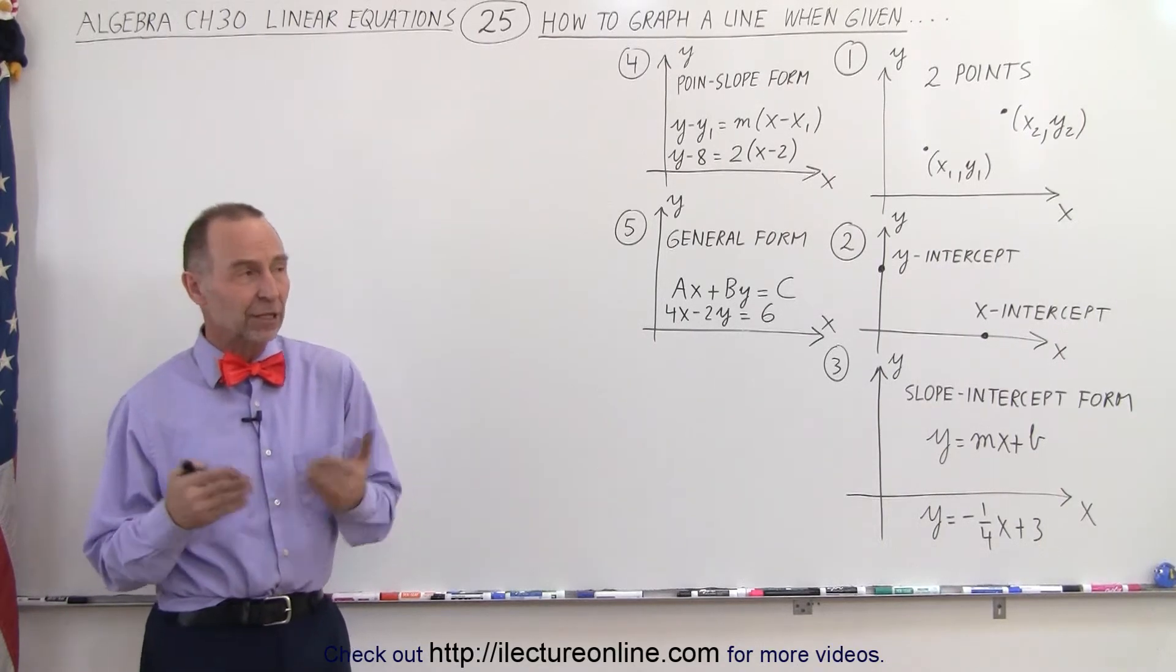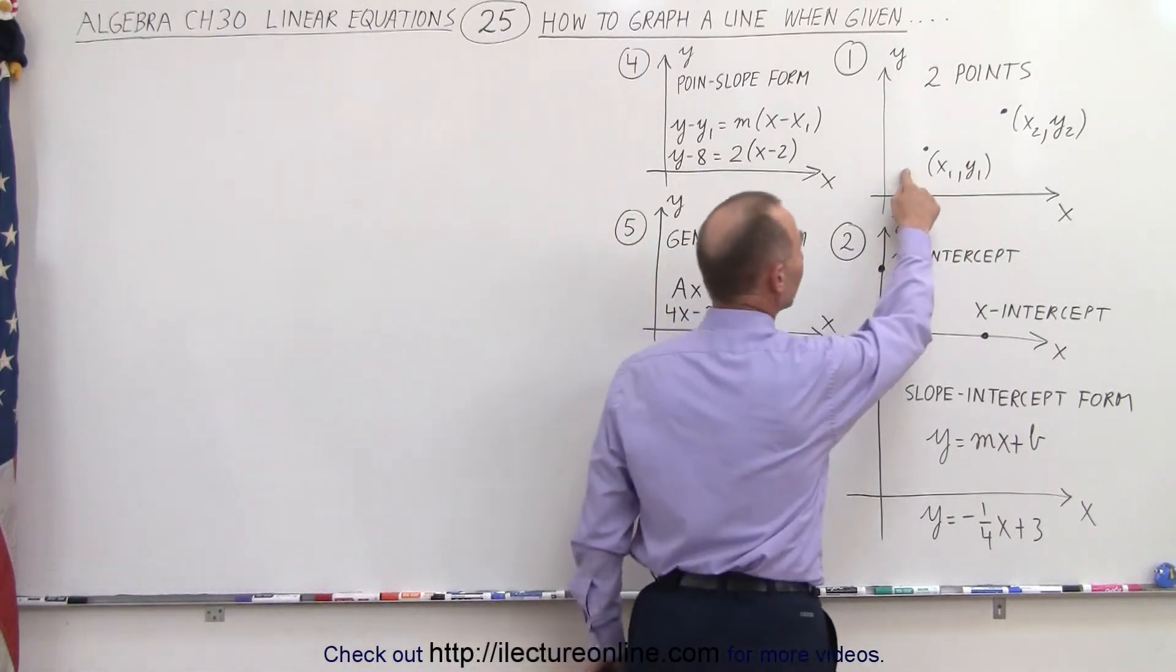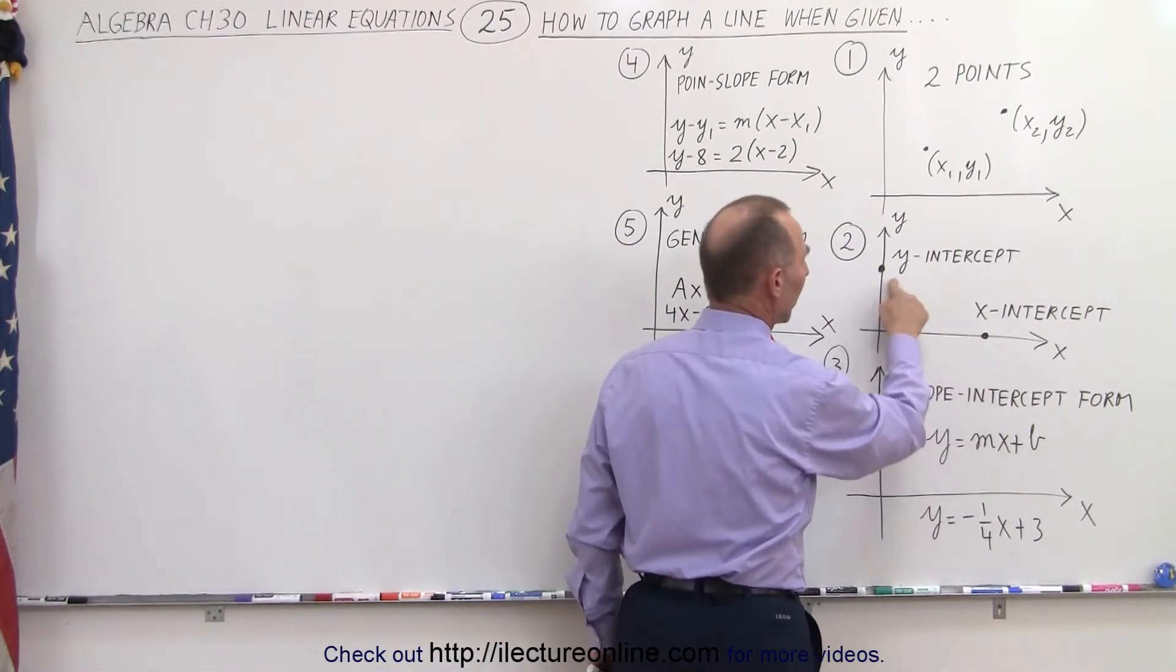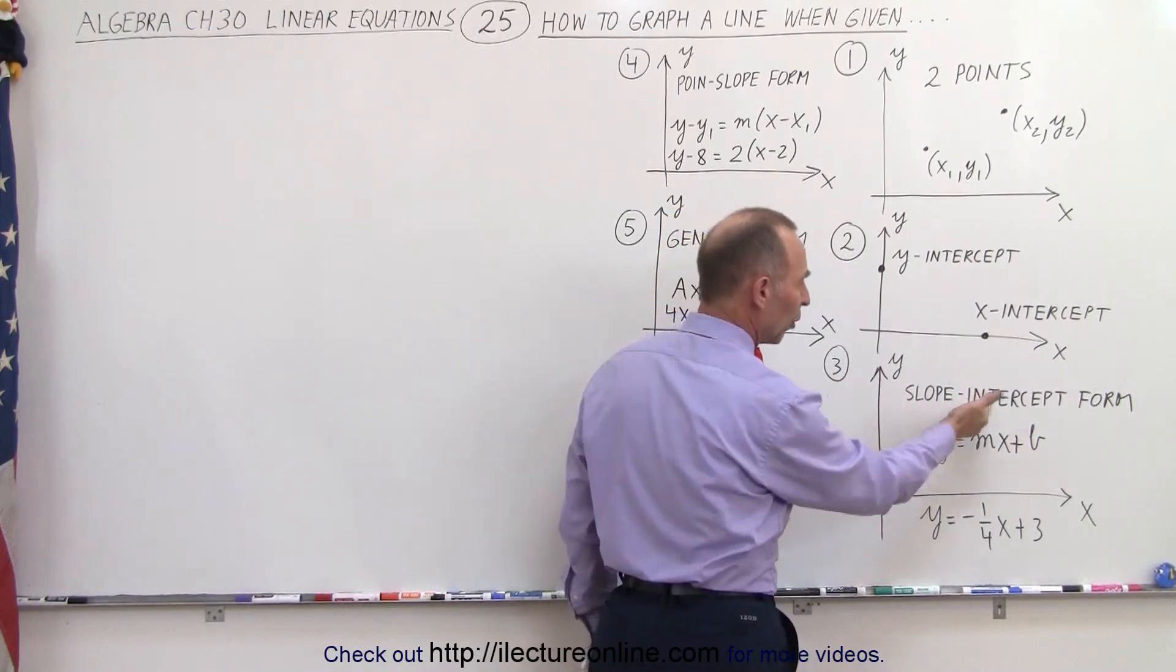Sometimes the information you're given can come in different forms. For example, you might be given two points on the line, or the x and y-intercept, or an equation in the slope intercept form.